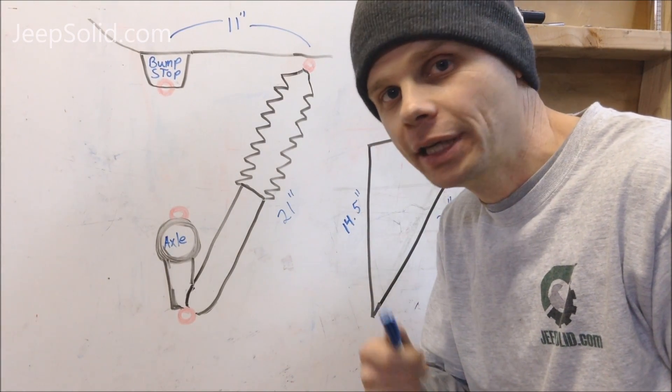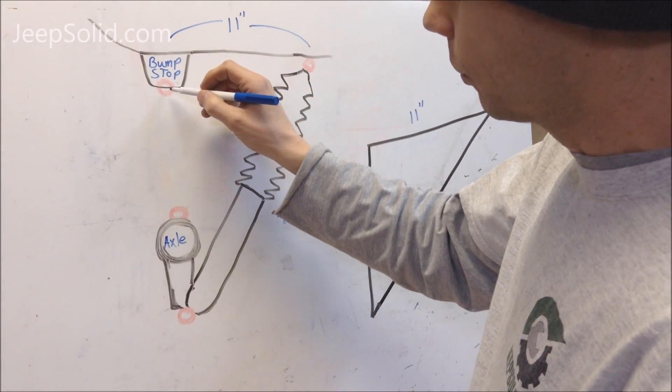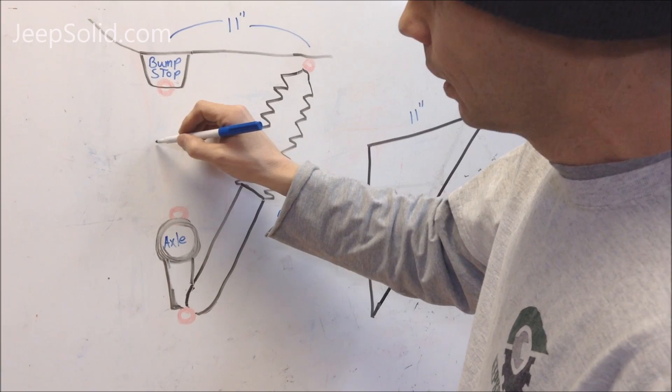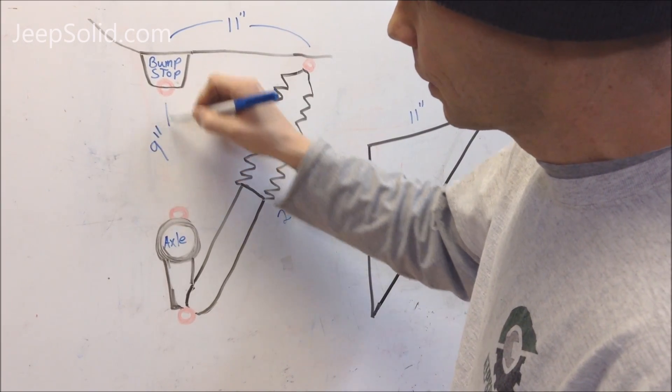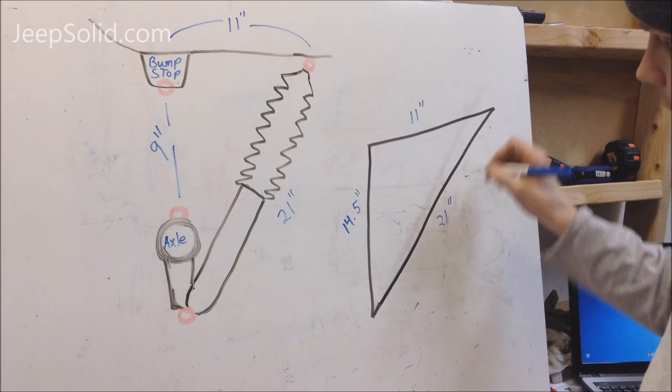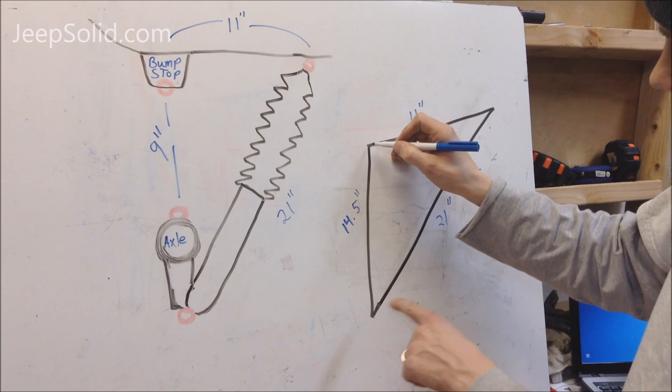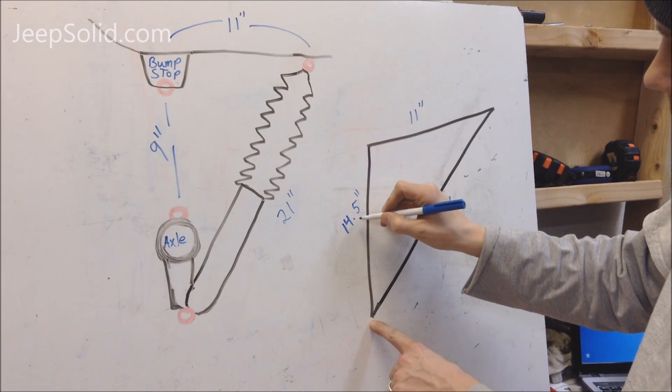Alright, this is where it gets a little tricky, but stick with me, it's really not that hard. The last measurement we took was from the bump stop to the axle, and that was 9 inches. So what we have to figure out is with our triangle here, this length right here from the bump stop to the bottom of the mounting point was 14.5.